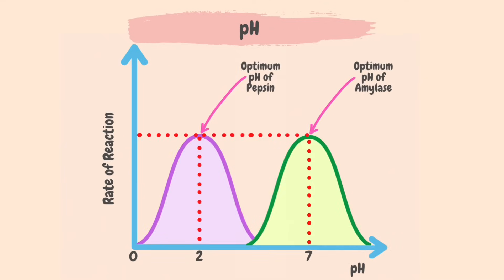Examples of two enzymes with different optimum pH are pepsin and amylase. Pepsin is an enzyme found in the stomach's acidic conditions and is therefore made to work best at a pH of approximately 2. Amylase, on the other hand, is found in saliva and has an optimum pH of 7. So although pepsin works best at pH 2, it will not function at pH 7, unlike amylase. Similarly, amylase speeds up the reaction rate at pH 7 but will not work at pH 2, unlike pepsin.